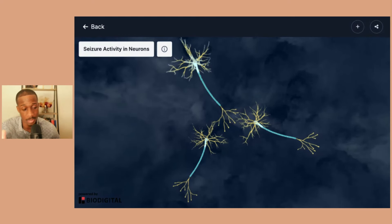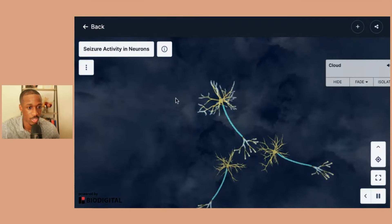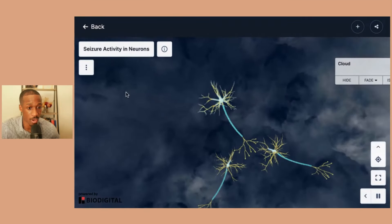And so there's different types of seizure activity that we won't go into. But it's important to know that overall, a seizure is caused by abnormal electrical activity in the brain. So that completes our part for seizures.